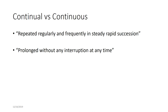Continual versus continuous: continual means repeating regularly and frequently in steady rapid succession — like a blood pressure cuff going up every three minutes. Continuous is prolonged without any interruption at any time, so if you're watching blood pressure using an arterial line, that's the difference.